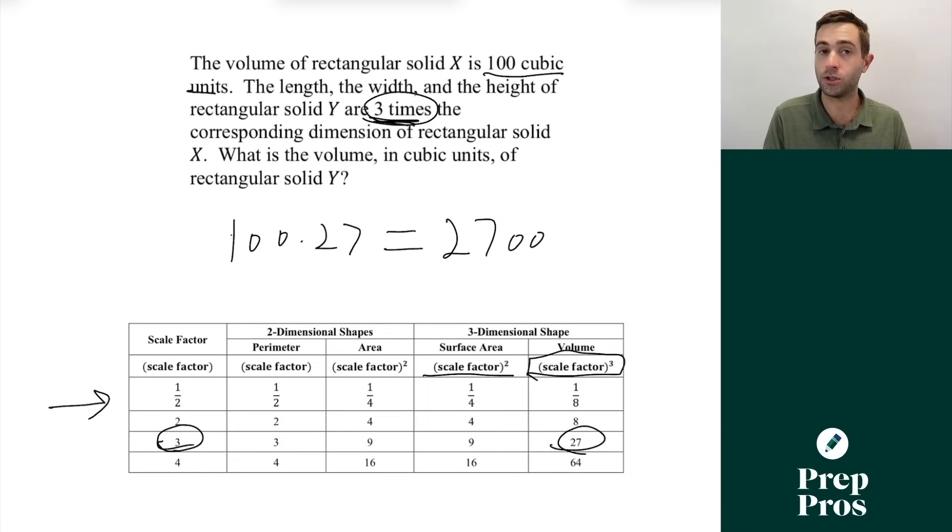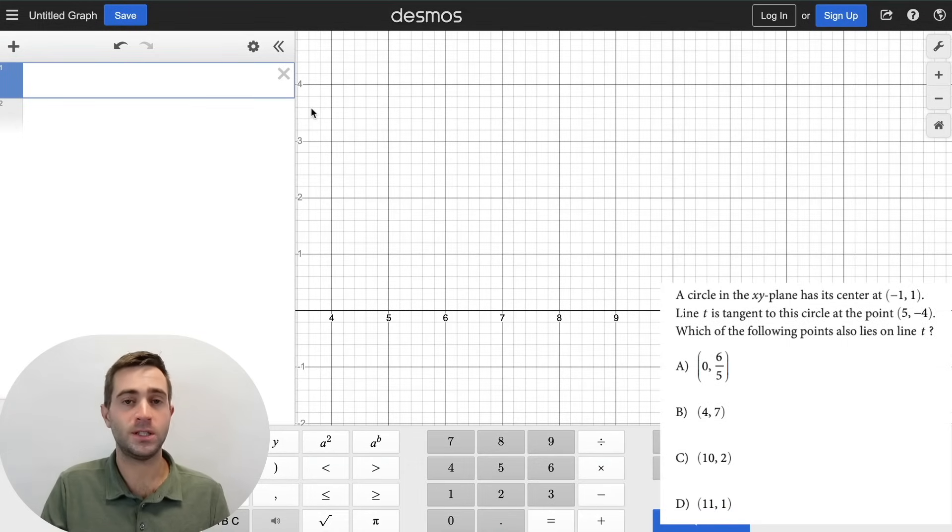If you're dealing with surface area, it's your scale factor squared. And area is also your scale factor squared. Now, one of the other things you will definitely see on your digital SAT are linear equations. And most of these can be done in Desmos if we understand some principles and some tricks. So this is a whopper of a question. A circle in the XY plane has its center at negative 1 comma 1. Line T is tangent to this circle at the point 5 comma negative 4. Which of the following points lies on line T?